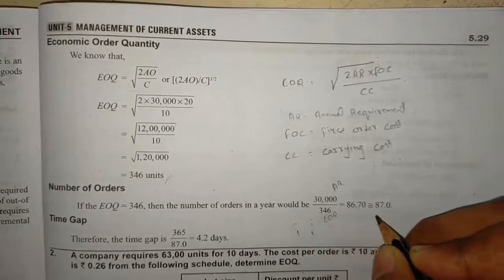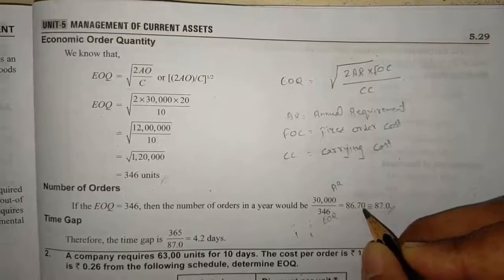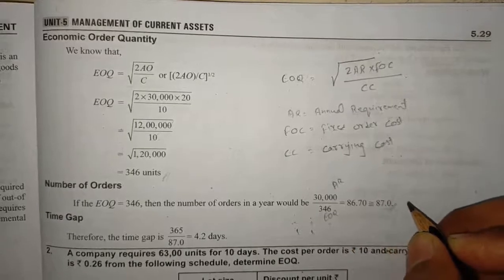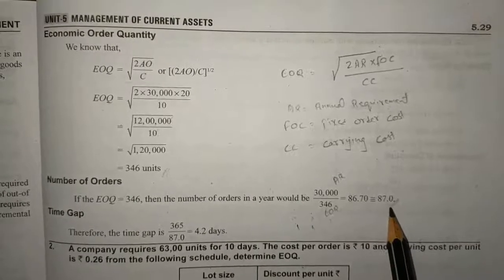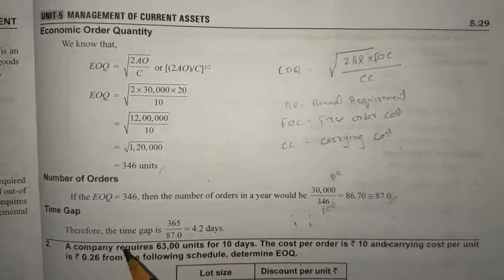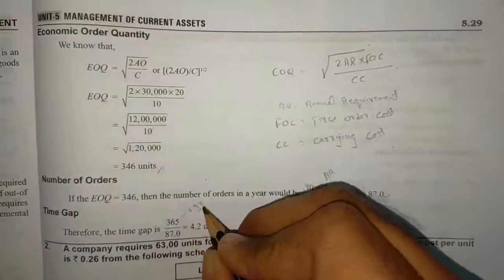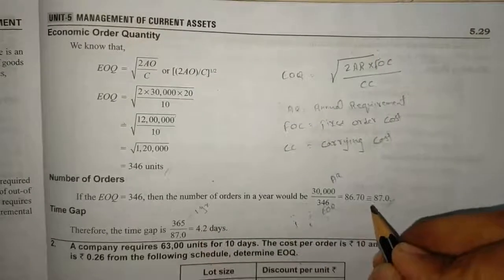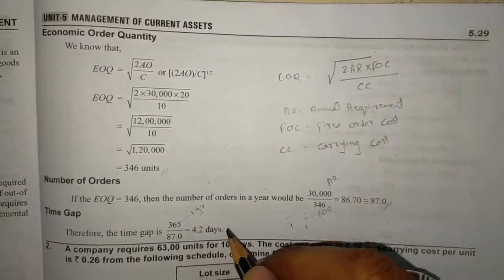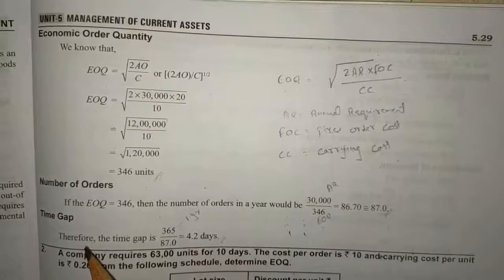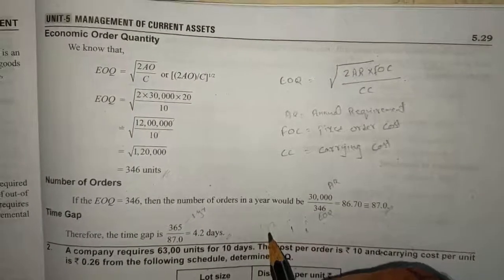You have to place an order 87 times. Then what would be the time gap? If 87 times you are going to order, how many days are there in a year? Therefore, the time gap is 365 days in one year divided by 87 orders, which equals 4.2 days. This means the time gap between two consecutive orders is 4.2 days.